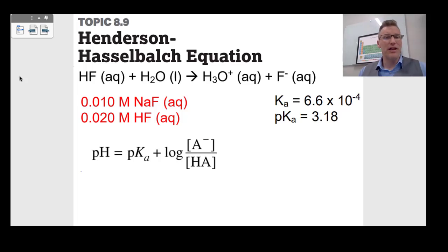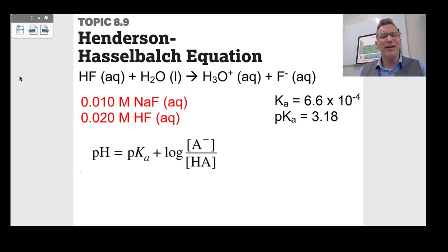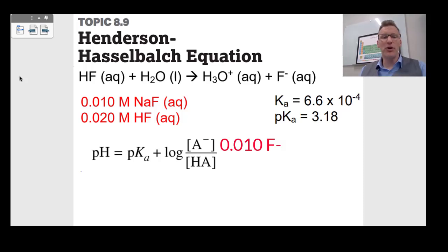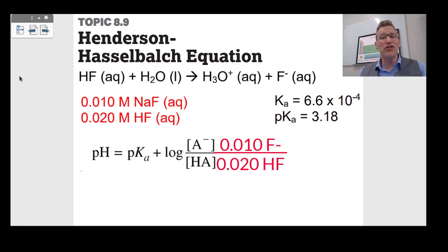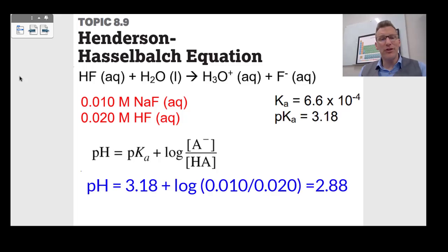Topic 8.9 moves into the Henderson-Hasselbalch equation, which is on your equation sheet: pH equals pKa plus log of A− over HA. If you have a perfect buffer with equal amounts of A− and HA, log of 1/1 is 0, so pH equals pKa. In this example, we have 0.010 molar NaF — that's F− — and 0.020 molar HF. We have more acid than conjugate base, so the pH will be a little less than the pKa of 3.18. Plugging in the numbers gives a pH of 2.88.